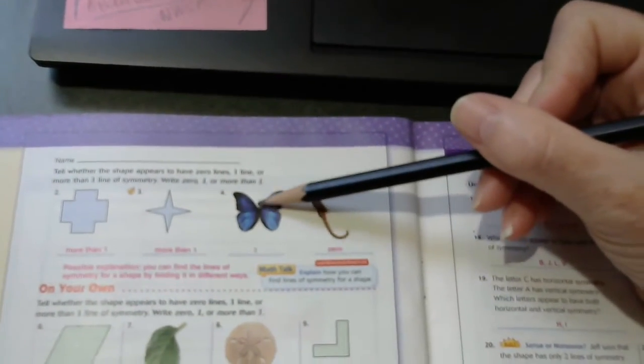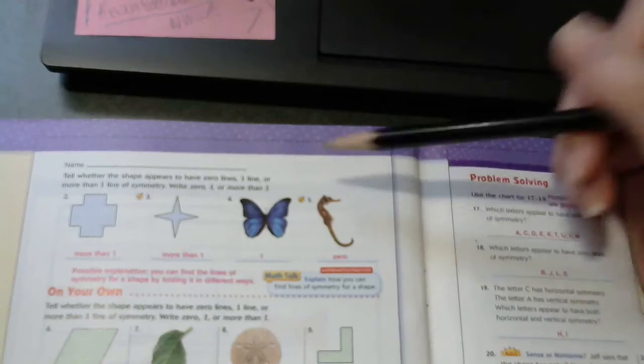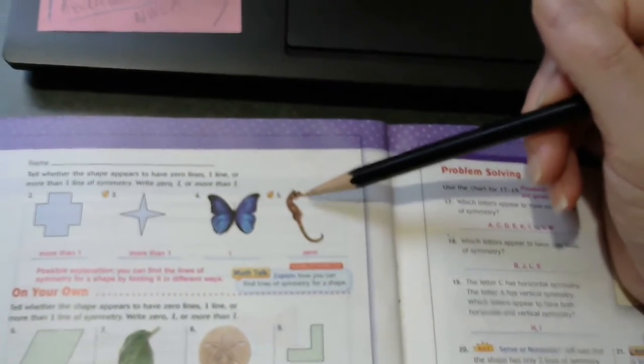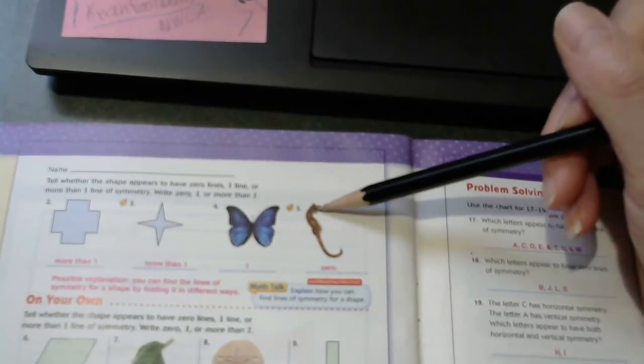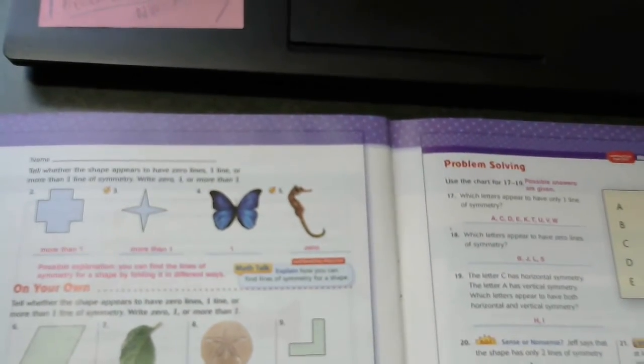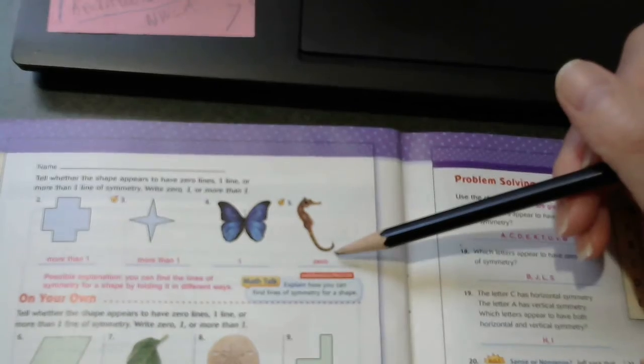Now, our butterfly only has one line of symmetry. And our sea creature here has zero lines of symmetry.